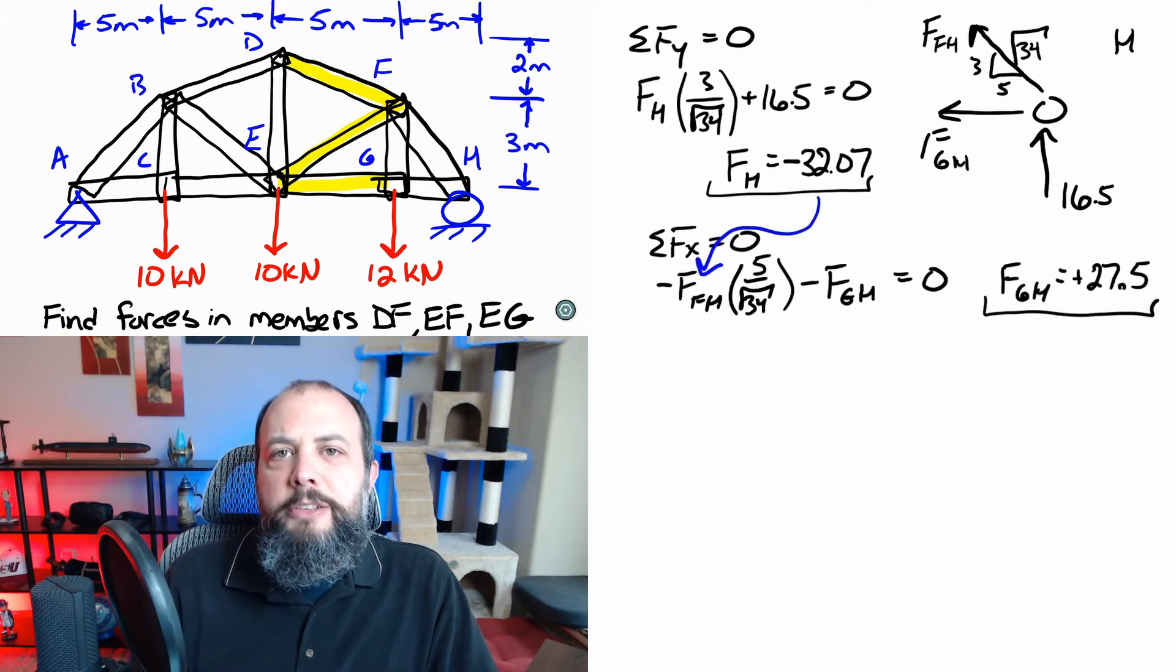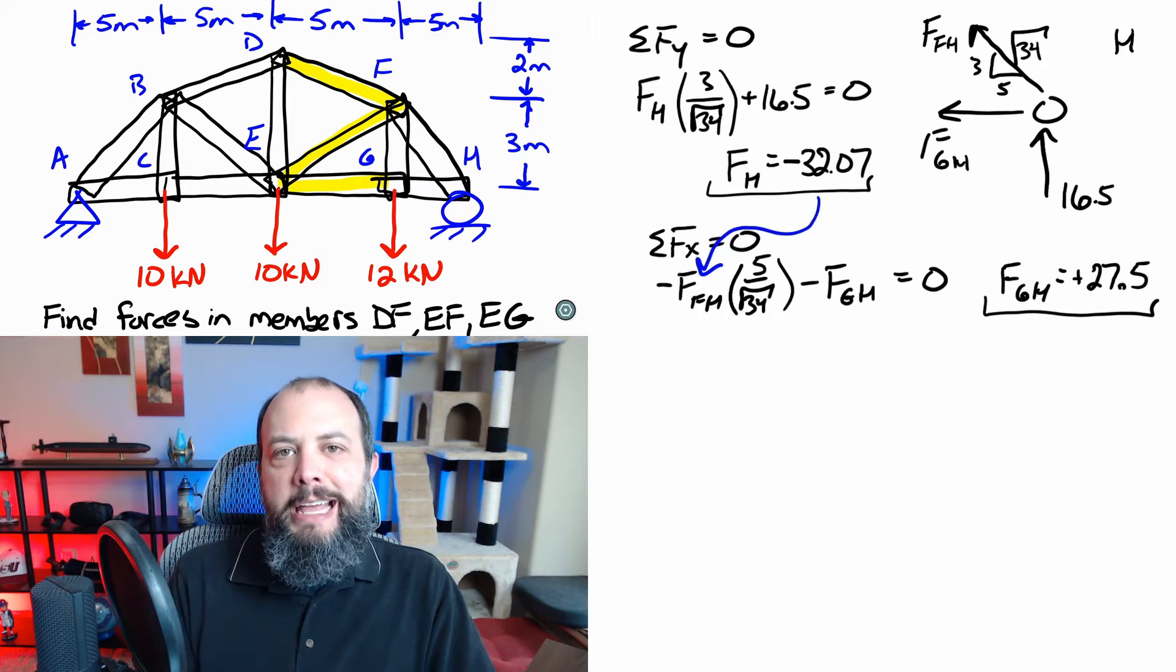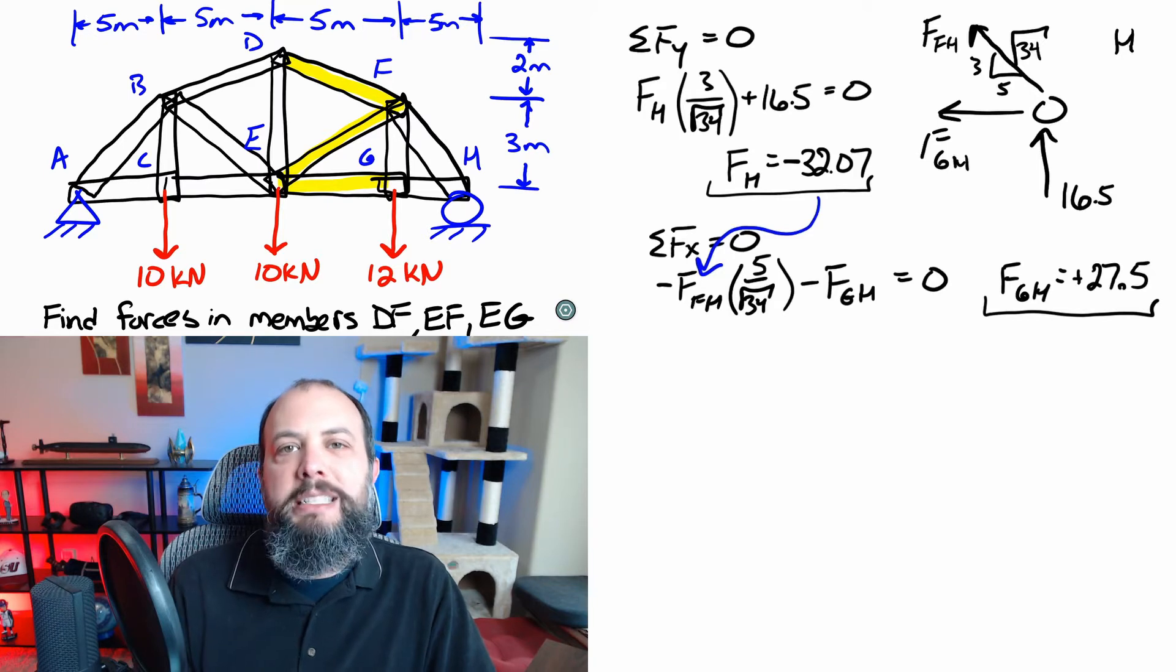And so now writing down the x direction equation and plugging in the negative 32 means it's negative negative 32 which makes it positive. So you get a final answer for FGH that is positive.